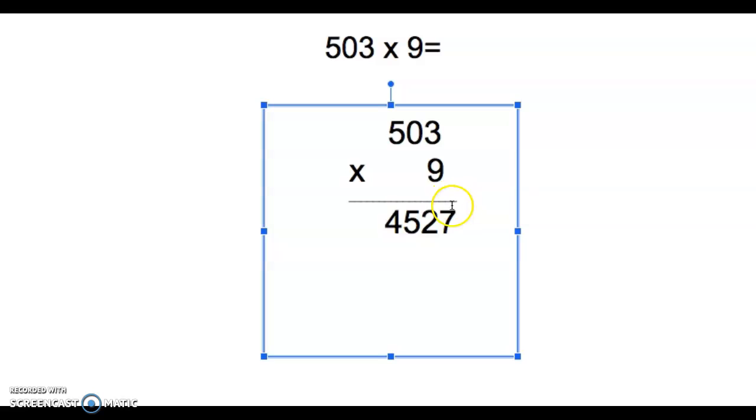Okay, so again we did 9 times 3 is 27, but we had the imaginary 2 up here. Left the 7 because the 7 is in the ones place. Then we move to our 0, and the place value is the value of 10. So 0 times 9 is 0, but we had to add that 2 because of 27. So we have the 2 at the bottom.